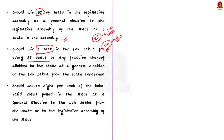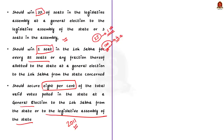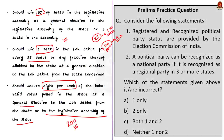The final condition is that the political party should secure 8% of the total valid votes polled in the state at the general election to the Lok Sabha or to the legislative assembly of the state. This particular condition was added in the year 2011. These are all the conditions for a political party to get recognized as a regional party. Keep in mind that if any of these conditions are satisfied, then it can get recognized as a regional party.